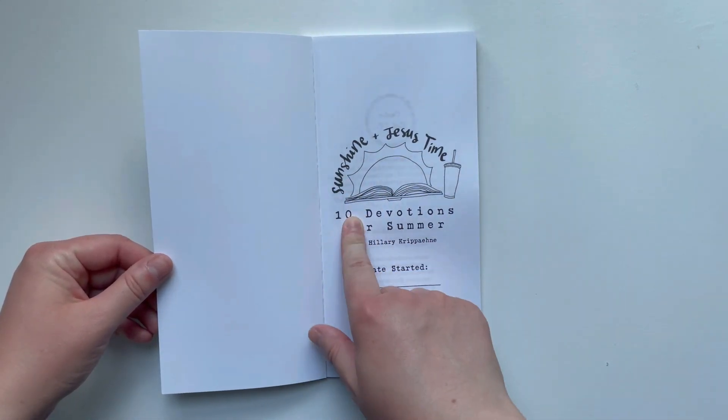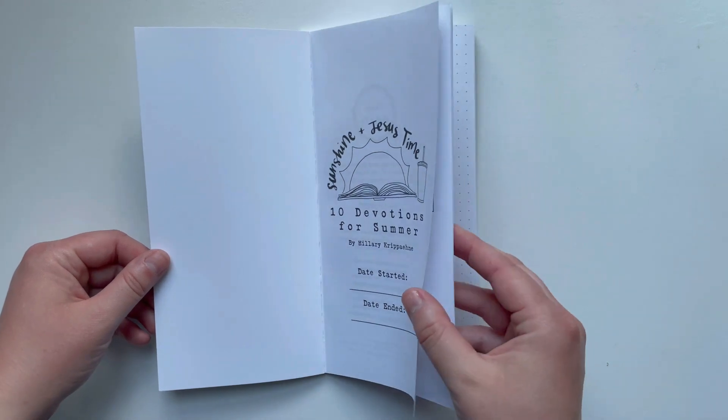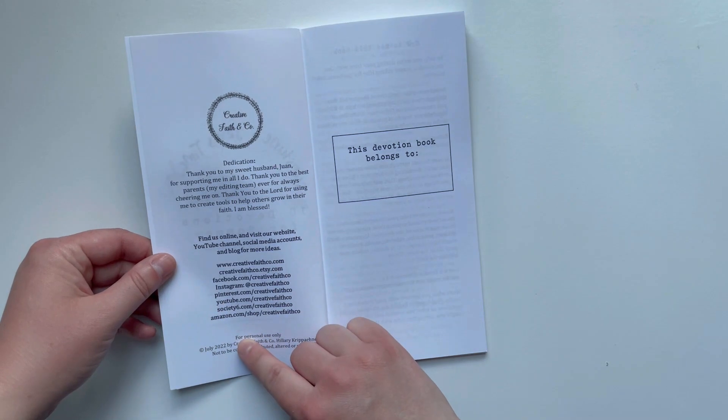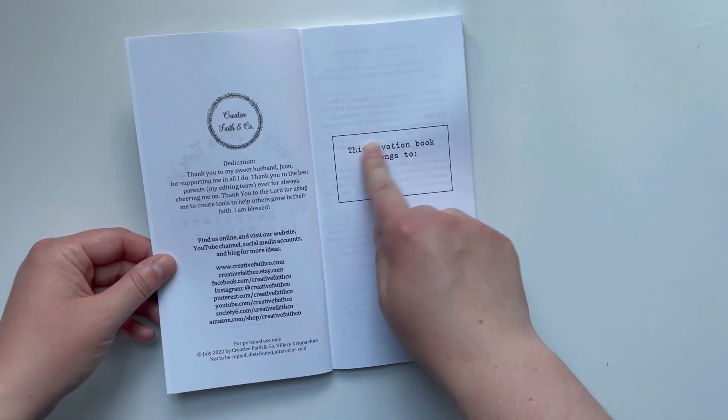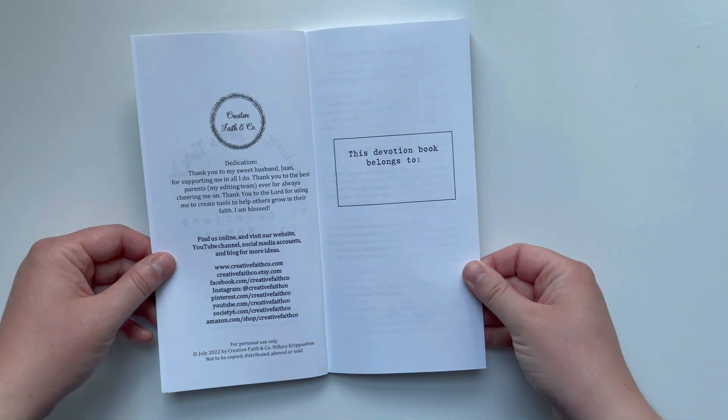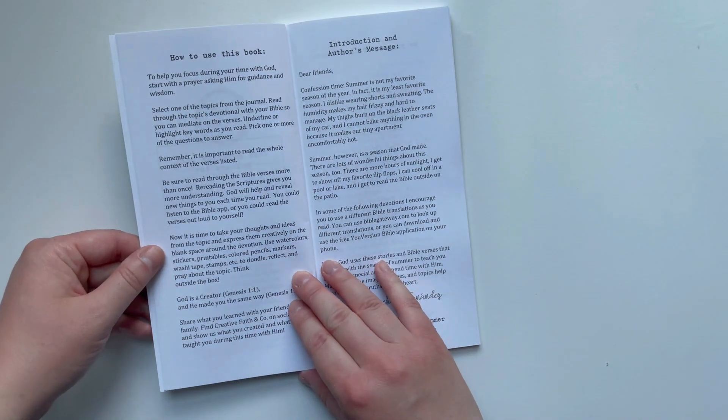The inside—I love how the inside cover turned out. It is black and white, so you could color this whatever colors you want. And you can write the date you started and the date you ended.